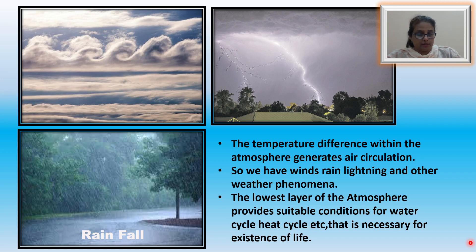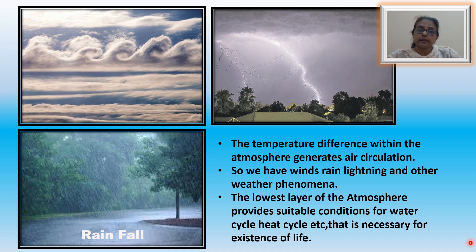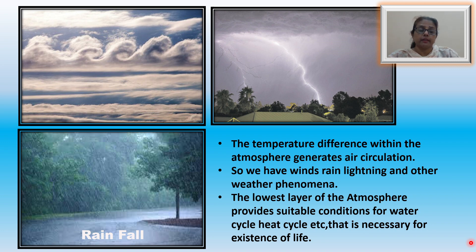Besides all this, the temperature difference within the atmosphere generates air circulation. So we have winds, rain, lightning and all other weather phenomena. The lower layers of the atmosphere provide suitable conditions for the water cycle, heat cycle, etc. And all these are very necessary for the existence of life.